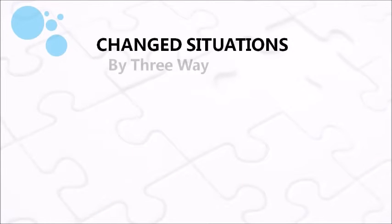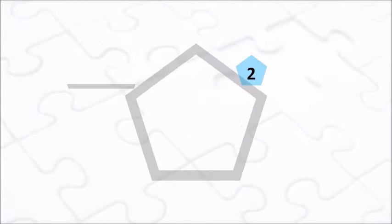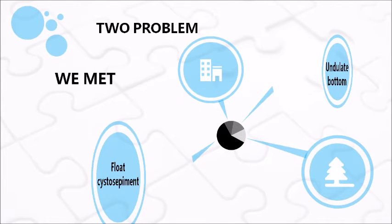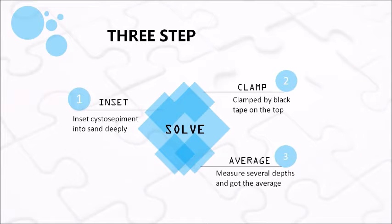In this experiment we used a lab flume to test straight and bending situations, and used sediment to cover part of the channel, controlling the valve to change flow rate. As for the problems we met, the sediment would flow on the water surface, making it hard to clamp them down.